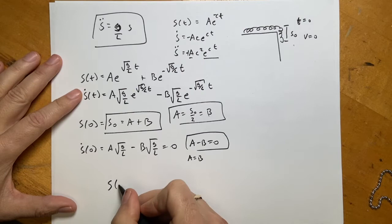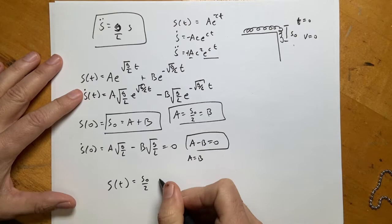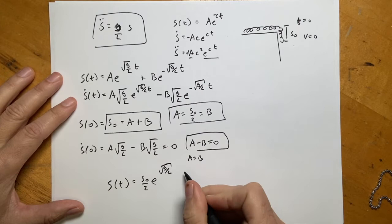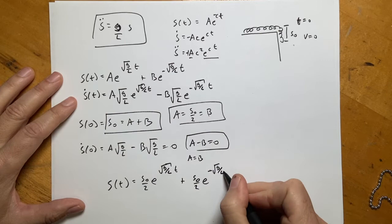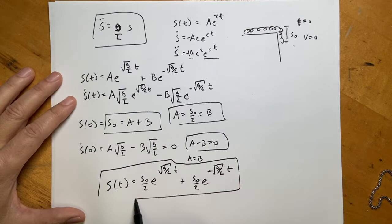Substituting back, the full solution is: s(t) = (s₀/2)·e^(√(g/l)·t) + (s₀/2)·e^(−√(g/l)·t). That's the position as a function of time.